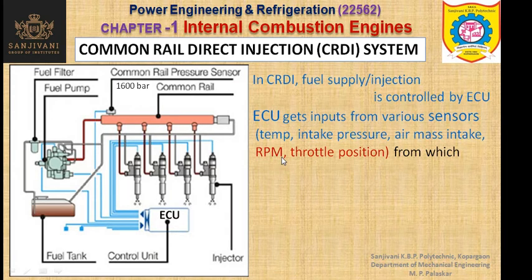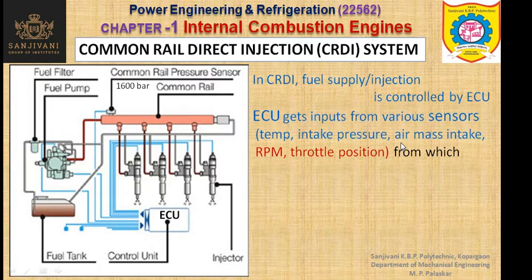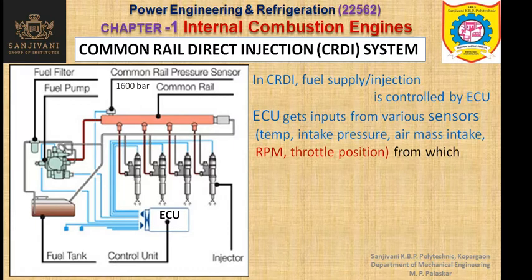The RPM of the crankshaft — the speed of the crankshaft — is also sensed by the electronic control unit, as is the crank position. The ECU also senses the air mass intake — how much air is entering inside the engine. The vacuum is also sensed. So many parameters are sensed by the electronic control unit, and then calculations are done automatically to decide how much quantity of fuel should be injected by the injectors.